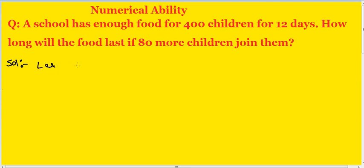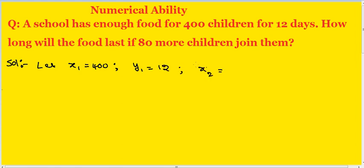Let x1 equal the number of children: 400. y1 equals the number of days: 12. x2 equals how many children total — 400 plus 80 equals 480. y2 equals how many days? That's what we need to find.